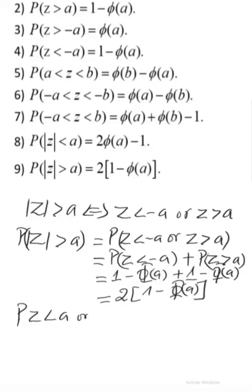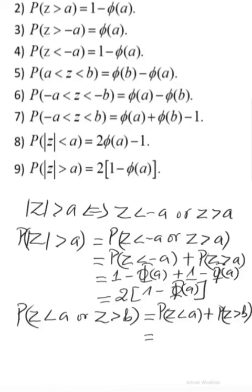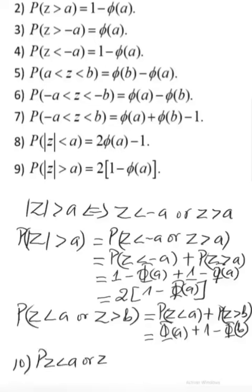There is also the case P(Z < a or Z > b). These are mutually exclusive events, so P(Z < a) + P(Z > b). For positive a and b this gives Φ(a) + 1 − Φ(b) = Φ(a) − Φ(b) + 1.